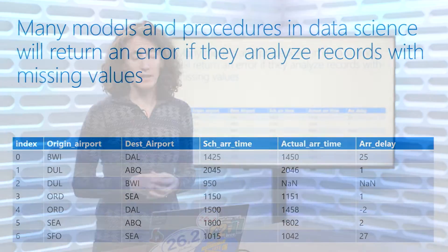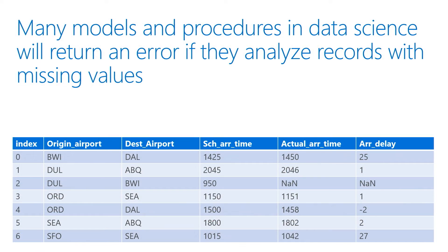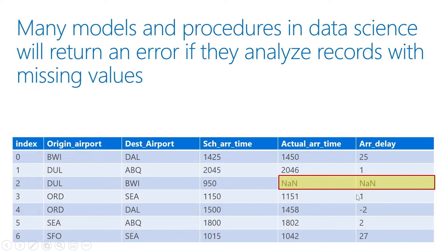Specifically, let's start with missing values. There are many different data science methods you'll use which will actually crash if they hit a row with missing values. If I had the data frame here in front of me for some airport information, and I have an arrival time and a delay time showing up as NaN, this could actually cause my code to crash and I won't be able to train a model.